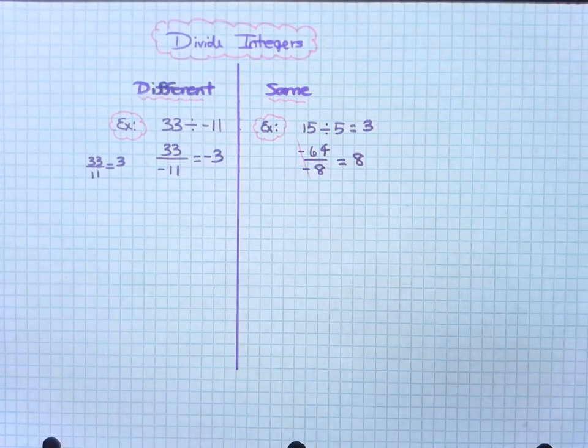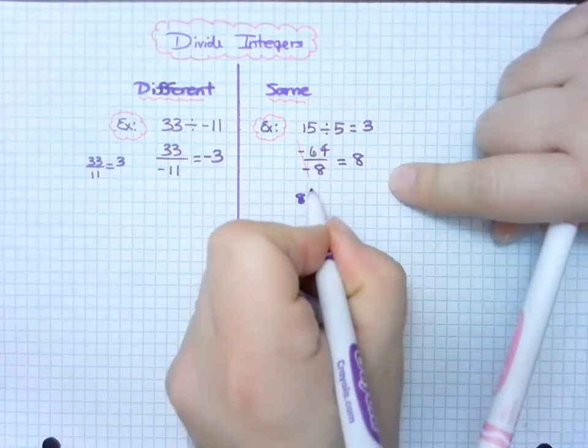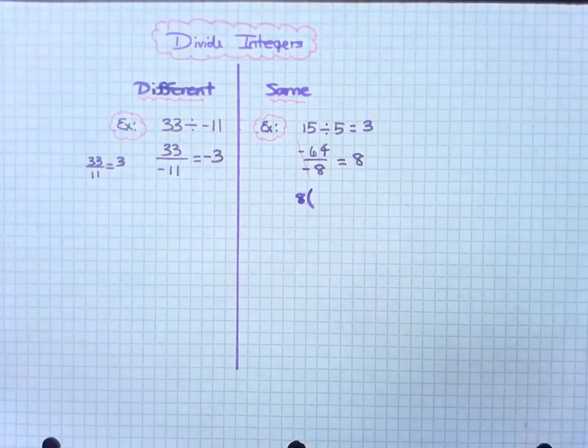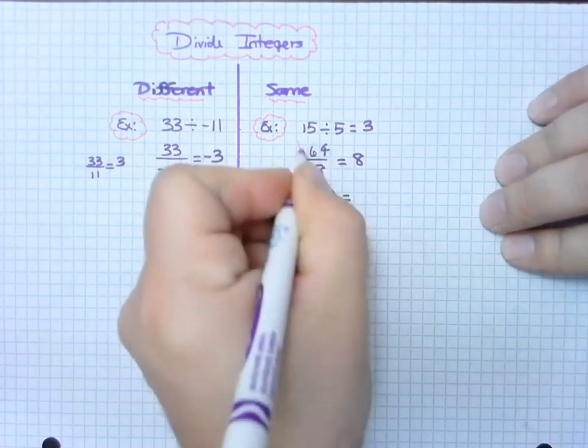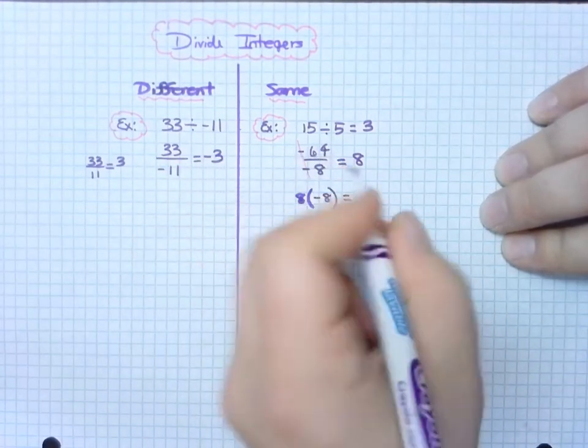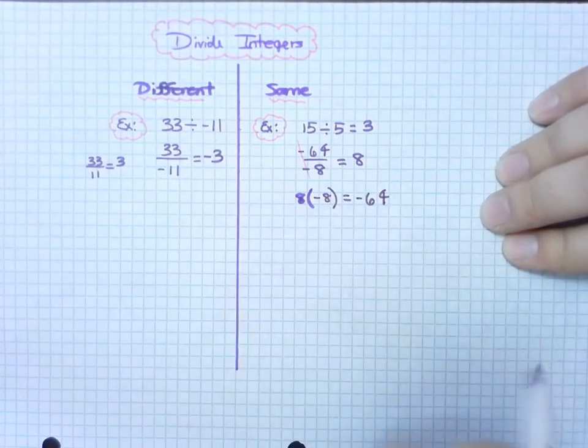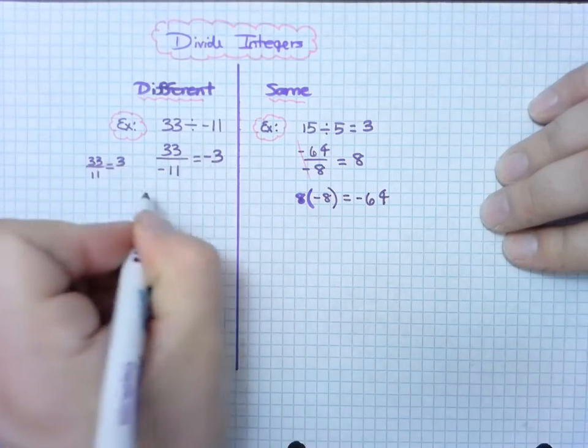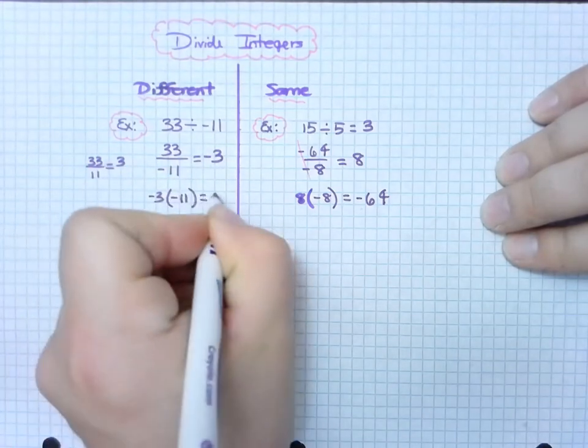Last little thing I wanted to show here today is that you can always check your work by multiplying your answer times the smaller number of the problem, and see if it gives you the starting value or the largest number, and it does. 8 times negative 8 is negative 64. Same with this one, negative 3 times negative 11 is a positive 33.